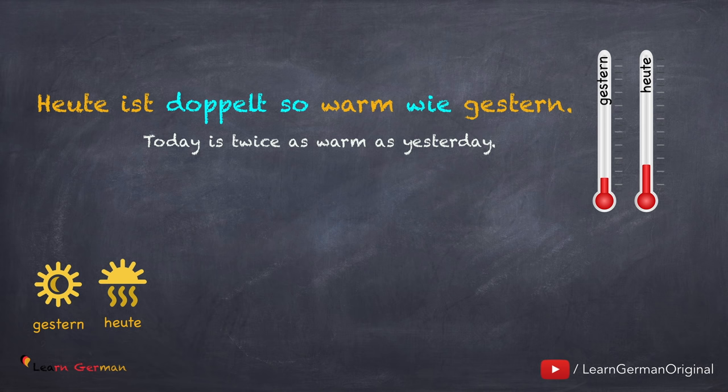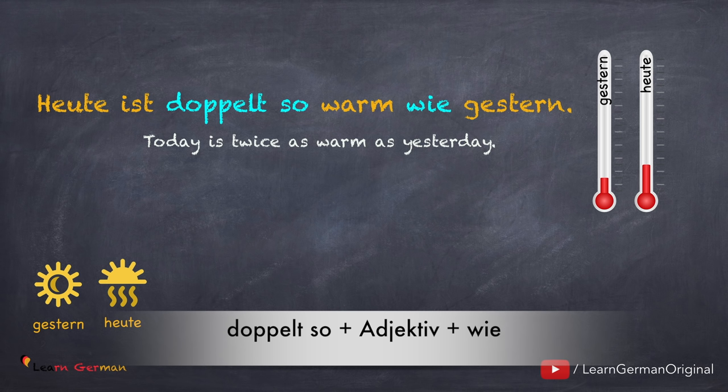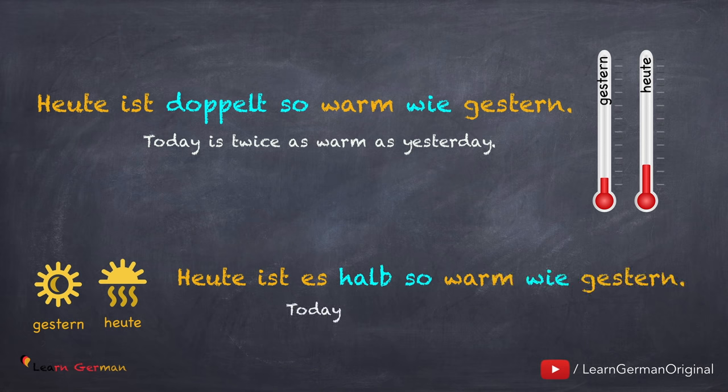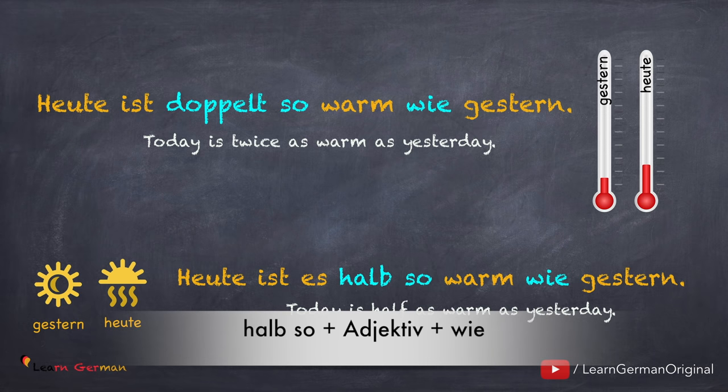Here we are using the positive form of the adjective along with doppelt so and wie. The next one is: Heute ist es halb so warm wie gestern. The use here is similar — the positive form of the adjective along with halb so and wie.